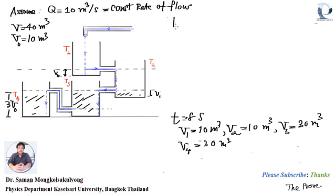At t equals 9 seconds, V1 is still equal to 10 mq.